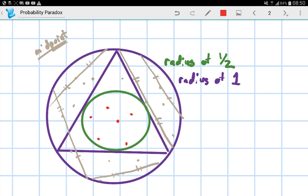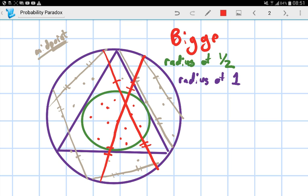So, you can see that this red line is bigger than the side of the triangle. So, every single random dot that lands in here is going to be bigger. The chord is going to be bigger. But, now, the probability that we randomly pick a point inside this green circle is the area of the green circle divided by the area of the purple circle.